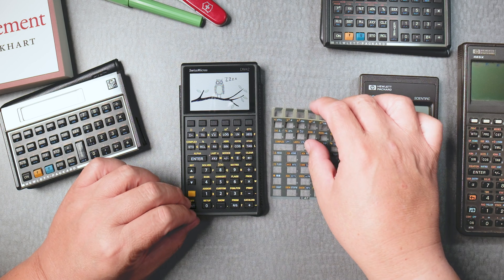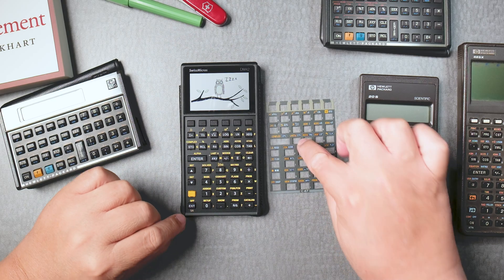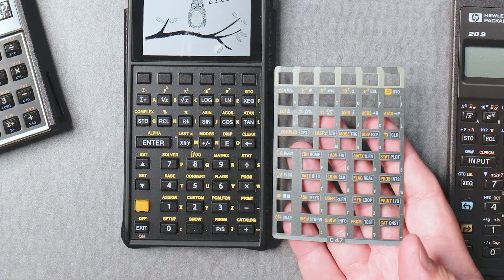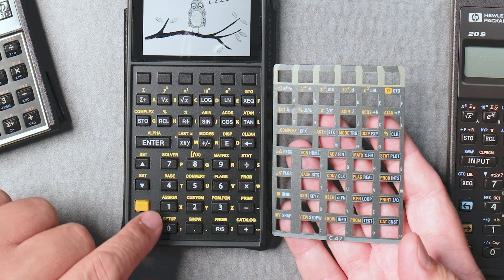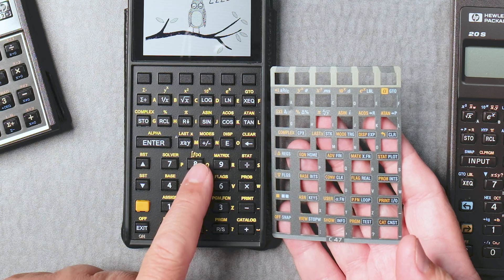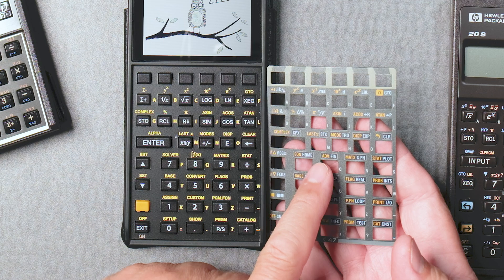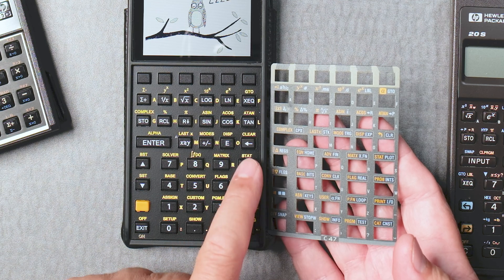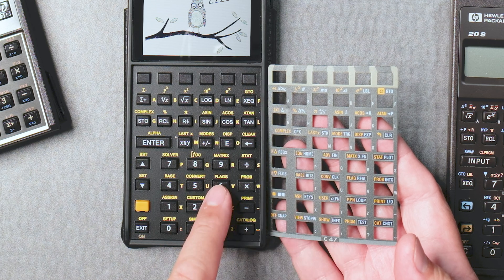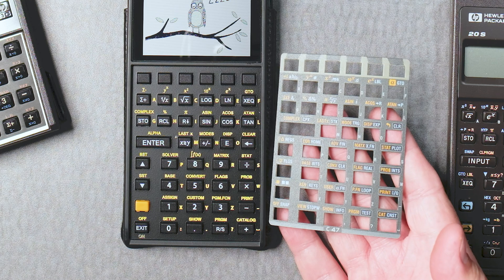Some people say that you really don't need this bezel because if you really look at it, it's possible. You know, like solver is equation, F the integration sign. Well, this one's not integration. Matrix, matrix. Stat, stat. Base, base. Convert, convert. Flag, flag. Probability, probability. I don't know, it's a little bit hard to see.